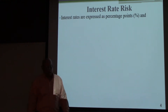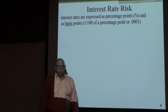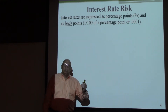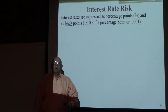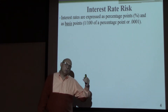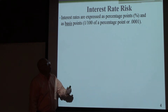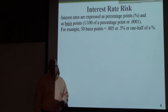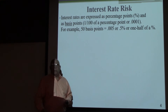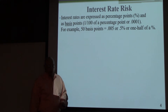Interest rates are expressed as percentage points — ten percent, eight percent — and as basis points. A basis point is one one-hundredth of a percentage point, which is 0.0001, or 0.01%. For example, fifty basis points equals 0.005, or one-half of one percent.